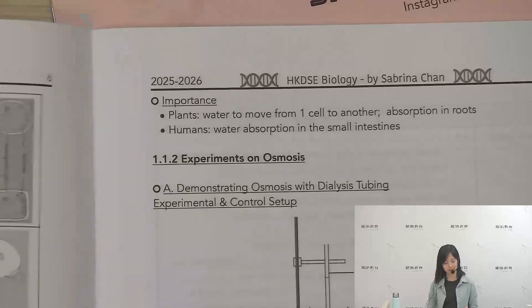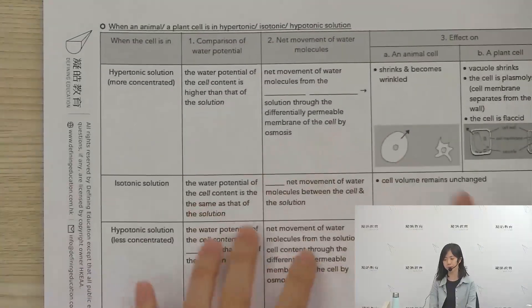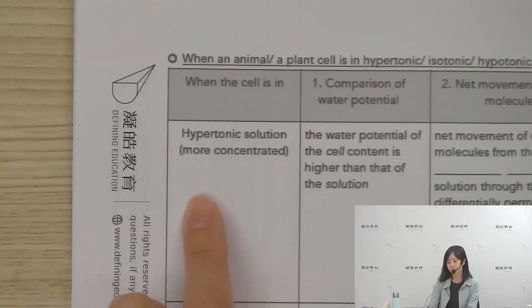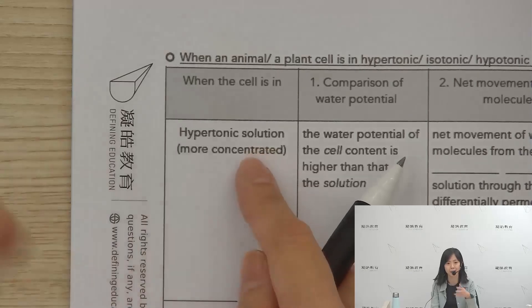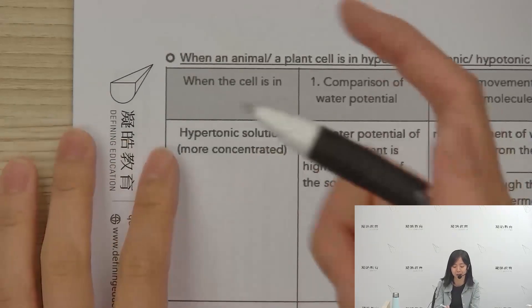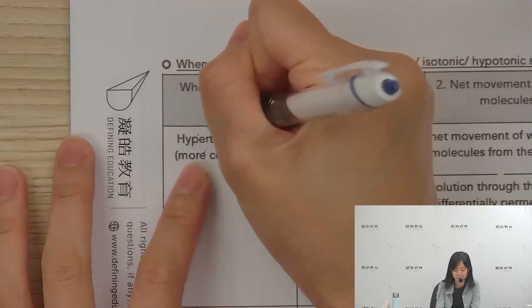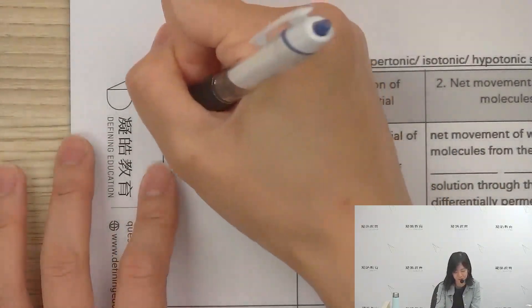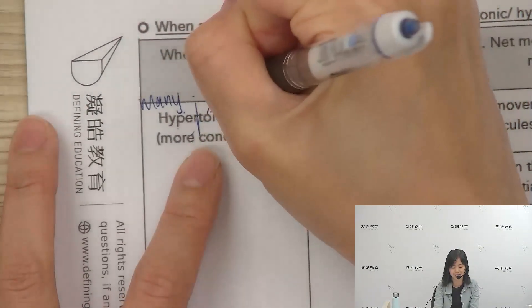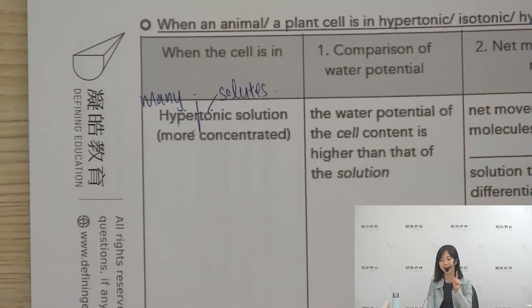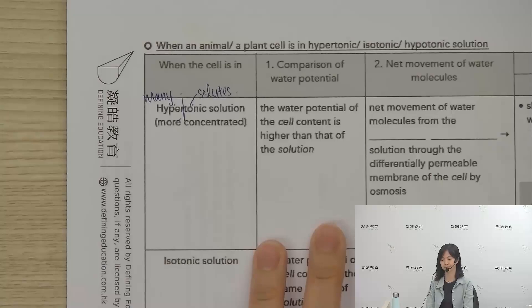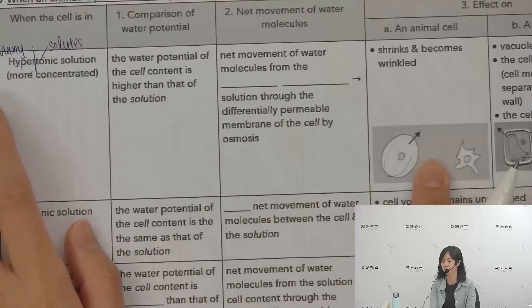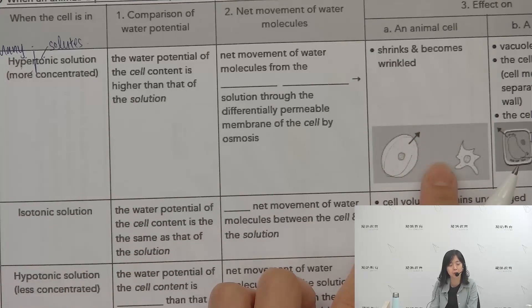Now let's look at the long-answer questions on page 6. These questions often ask you to place animal or plant cells into different solutions. One type is called a hypertonic solution. 'Hyper' means a lot or very high; 'tonic' relates to solute. So a hypertonic solution has a very high solute concentration.